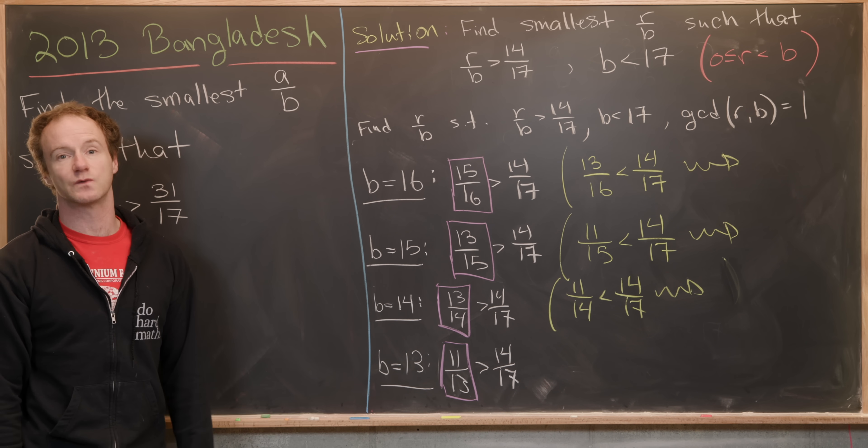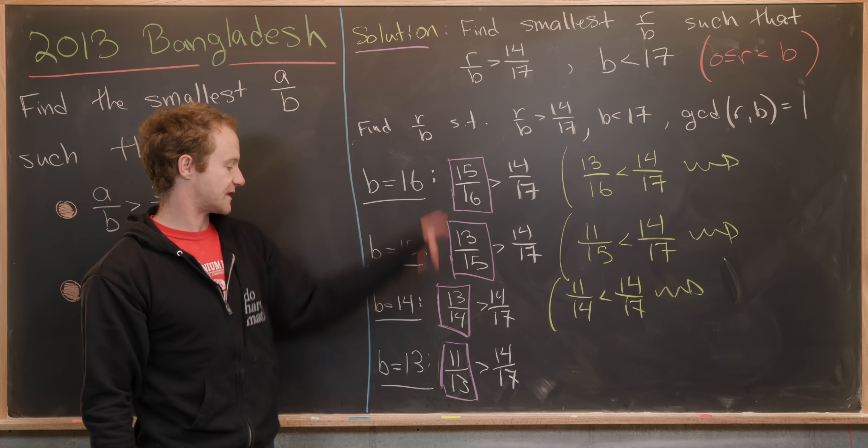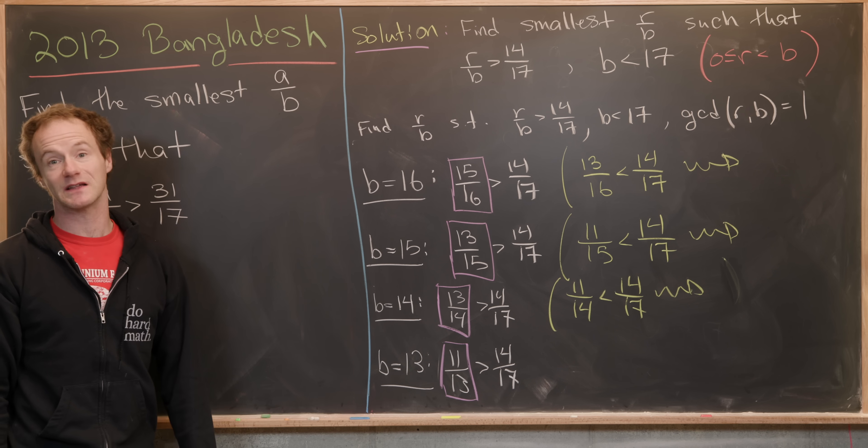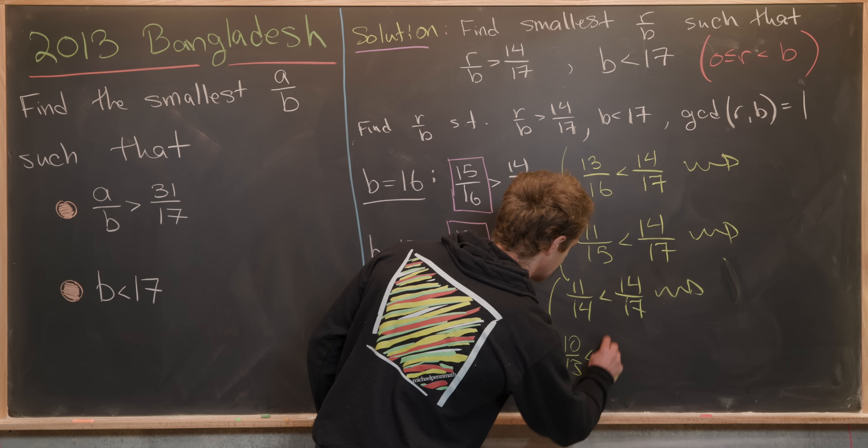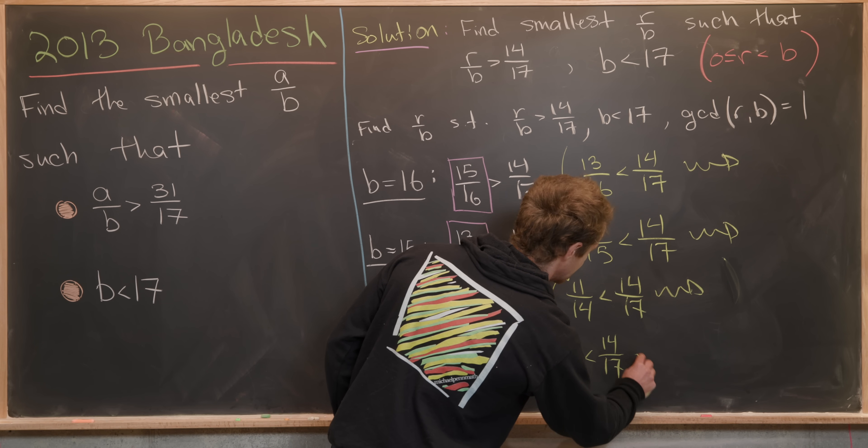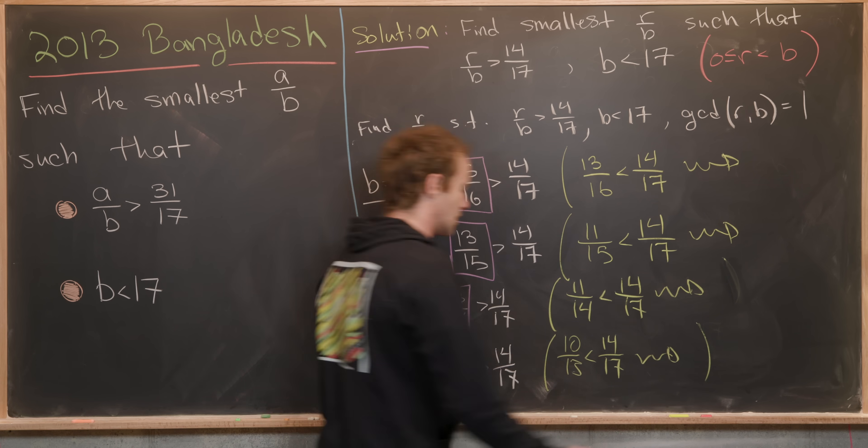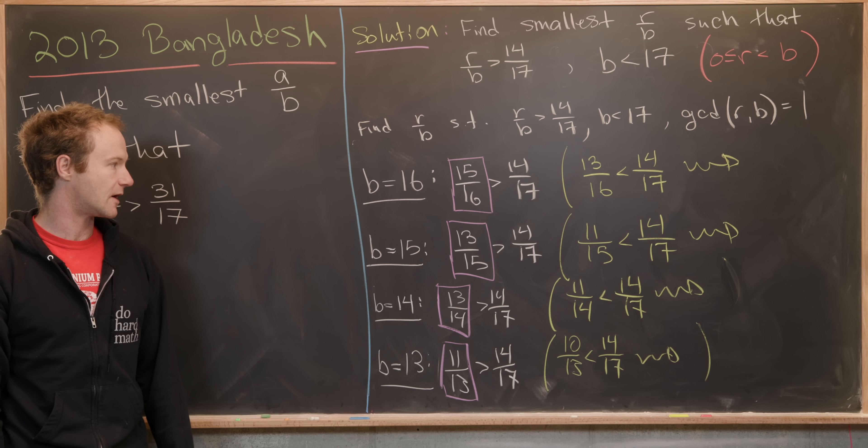12 over 13 is as well, but since we want the smallest, we might as well just keep the 11 over 13. But then 10 over 13 is less than 14 over 17, so everything with a smaller numerator with that denominator will not help us out.